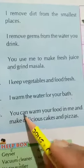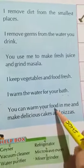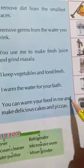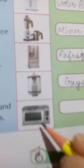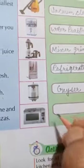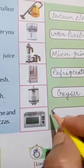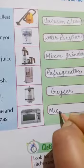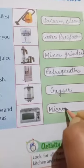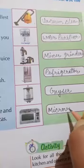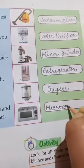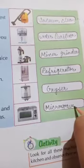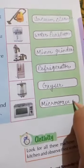Next statement. Number 6: You can warm your food in me and make delicious cakes and pizzas. Which picture is this? This is microwave oven. M-I-C-R-O W-A-V-E O-V-E-N. Oven.